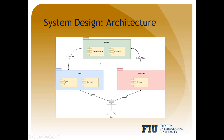The model layer is composed of game objects and cameras in Unity that make up the game environment. The view layer is made up of the screens of the iOS and Android devices that the application is being run on, and is rendered by the model layer.